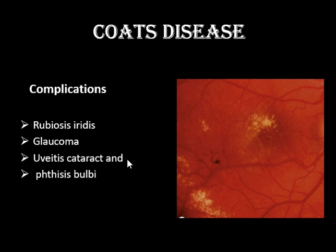The complications of Coats disease: patients develop exudative retinal detachment. Long-standing detachment leads to epiretinal fibrosis and fibrotic membranes in the vitreous cavity, which can lead to TRD as well. Persistent detachment leads to rubeosis iridis, which causes neovascular glaucoma. Patients also develop uveitis and cataract. If not managed appropriately and in a timely manner, this leads to phthisis bulbi — a non-seeing, shrunken eye with completely disrupted structure.